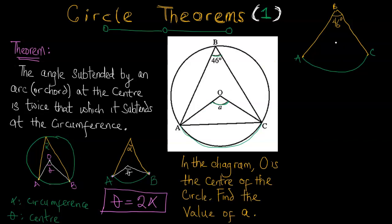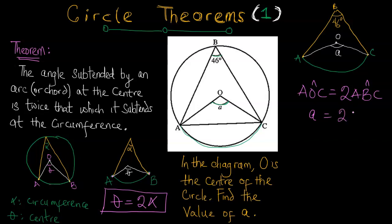So 46 degrees is the angle that arc AC subtends at the circumference. O is the center of the circle; taking it from the first source of the arc — OA — and from the second source OC, we see that this same arc subtends angle a at the center. The angle at the center, AOC, is always going to be twice that which the arc subtends at the circumference, which is angle ABC = 46 degrees. So the missing angle a is two times 46 degrees, and that's 92 degrees.